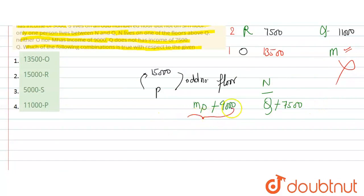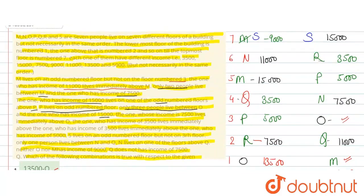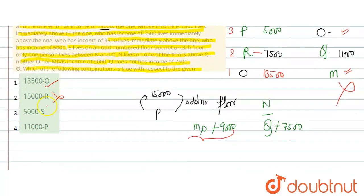So here O's salary is 15000, 13500. Yes, absolutely. Let's check R's, R's is 7500, so this is wrong. Let's check S's, S has 9000, so this is wrong. P's salary is 5000, so this is also wrong. So the true information is option number one. So option number one, 13500 O, is the correct answer. Thank you.